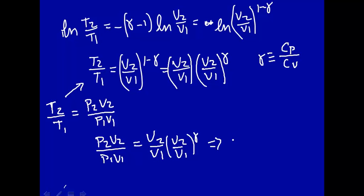That cancels out, so we have P2 over P1 is equal to V2 over V1, the whole thing raised to the negative gamma. Apparently I made a slight mistake here, 1 minus gamma, so this should be a minus here.